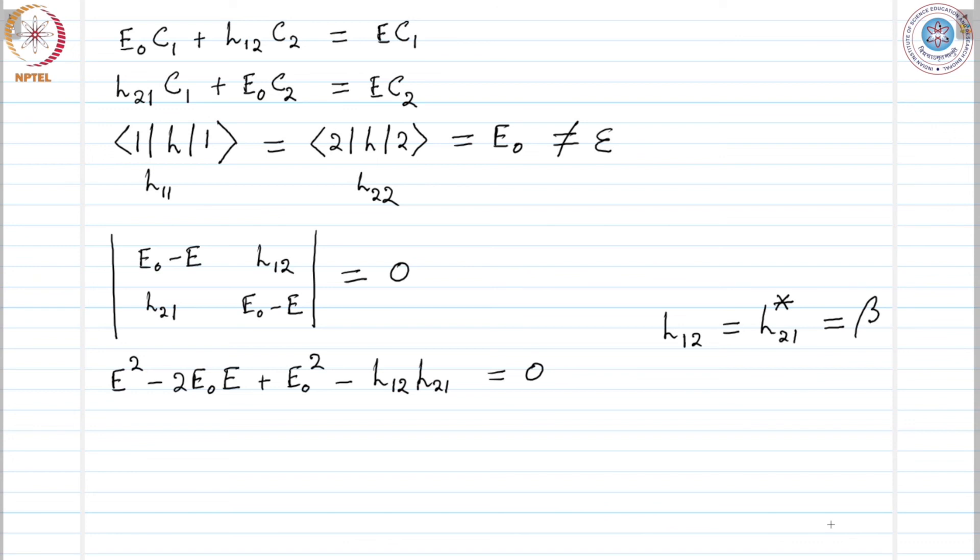The solution to this quadratic equation would be one solution we are calling E subscript B, that is E naught plus beta, and the other solution E subscript A is E naught minus beta. This is the solution for the eigenvalues.